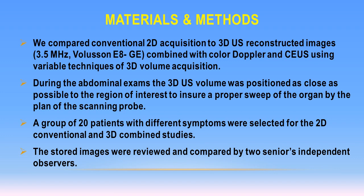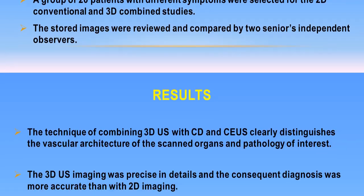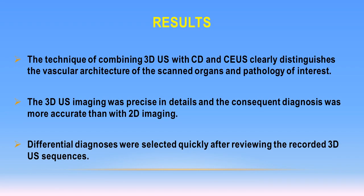A group of 20 patients with different symptoms were selected for the conventional ultrasound and 3D combined studies. This combined technique clearly distinguishes the vascular anatomy in normal and pathological conditions. The 3D ultrasound imaging shows more detail and greater accuracy for diagnosis than conventional ultrasound, revealing normal or pathological vascular detail not achievable with conventional ultrasound.